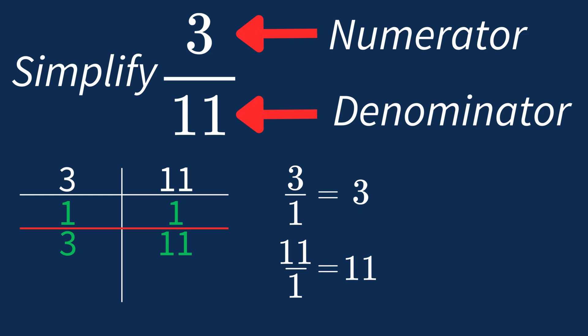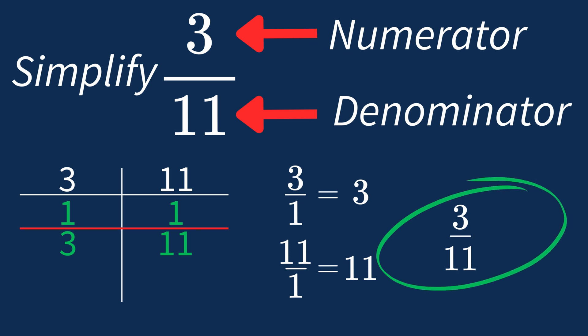After dividing both the numerator and denominator by their greatest common factor of 1, we still end up with the same fraction, 3 over 11. This shows us that 3 over 11 is already in its simplest form. There's no larger number that can divide both parts evenly, so 3 over 11 is an irreducible fraction, meaning it's as simple as it can get.